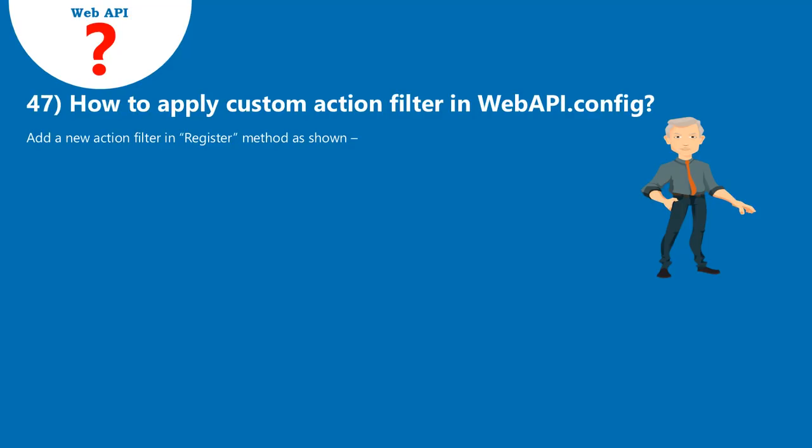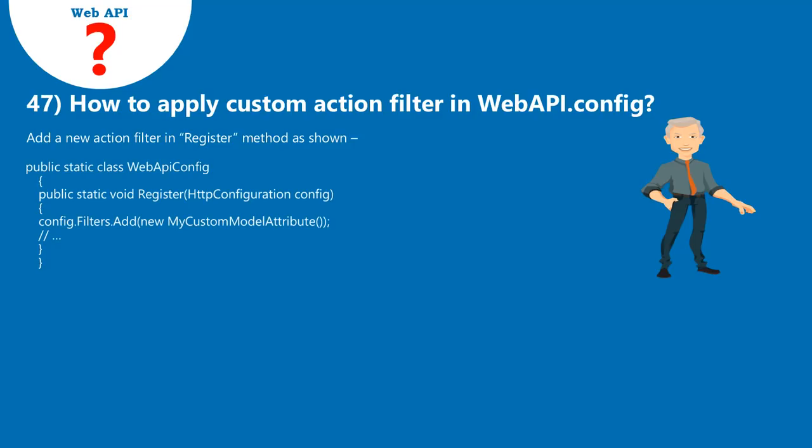Question 47: How to apply a custom action filter in WebApiConfig? Add a new action filter in the Register method as shown.